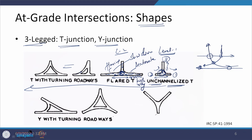A separate turning lane can be provided for traffic coming from one direction. On another side, space is provided but no separate lane, because not much traffic is taking a left. This channelization can also involve an island being provided inside the intersection. Once we talk about these islands, we need to see what should be the type, design, and size of these islands, how their noses have to be taken care of, and what widths need to be provided — elements we will discuss successively.